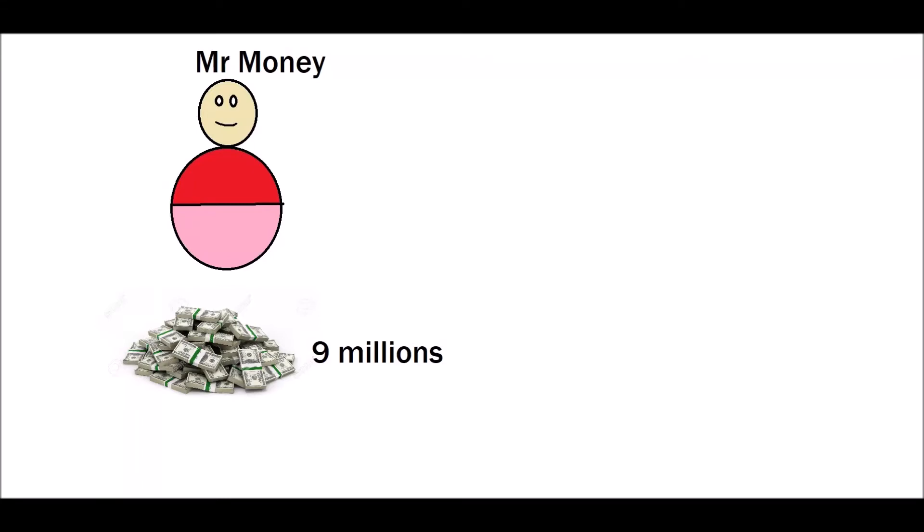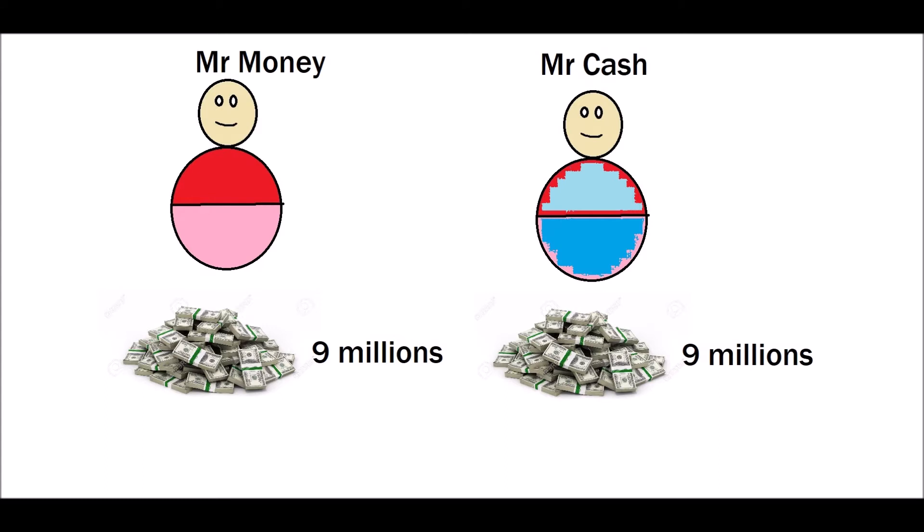Two criminals ran away with a lot of money. One is Mr. Money and he had nine million, while the other is Mr. Cash and he also had nine million. Well, to avoid suspicion they try to give their money to each other.